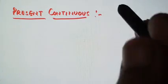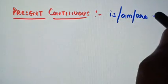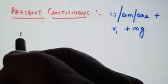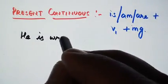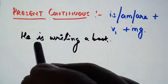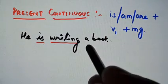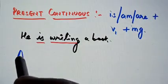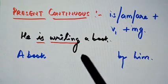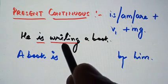Next, let's see present continuous. The rule for present continuous is: is/am/are plus first form of the verb plus 'ing'. So we make a sentence: 'He is writing a book.' To change this into passive voice, we first interchange the places of subject and object — 'a book' will go to the beginning and 'he' becomes 'by him'. The 'is' remains the same according to 'a book', and the third form of 'write' is 'written'.